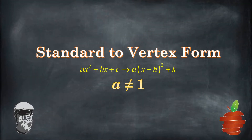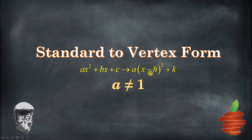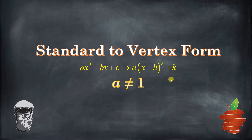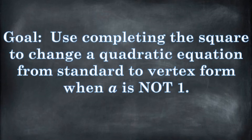Hello and welcome to the Bearded Math Man's YouTube channel. In this video what we're going to be doing is talking about changing a quadratic equation from standard to vertex form — ax squared plus bx plus c into a times x minus h squared plus k. And we're going to do it in the difficult case when a is not equal to 1. So that's our goal.